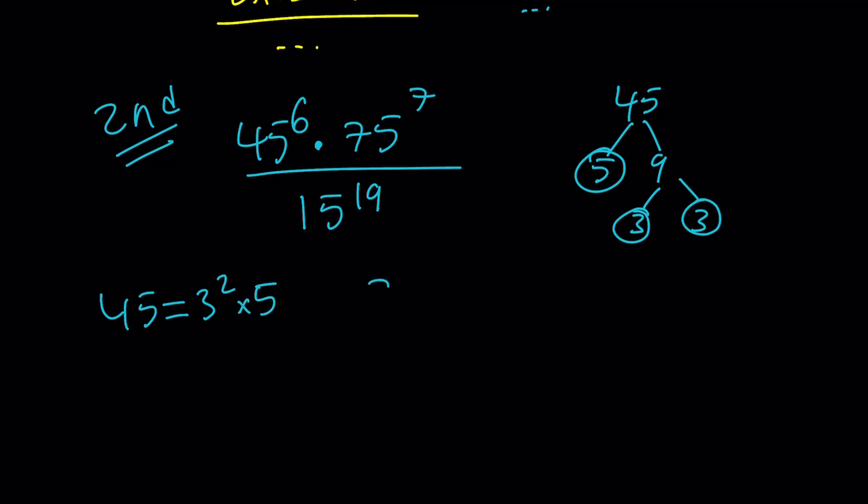And by the same token, 75 can be written as 3 times 25 which is 3 times 5 to the second power. If you want you can also put first powers, no big deal. And then 15 is just going to be 3 to the first and 5 to the first. Make sense?